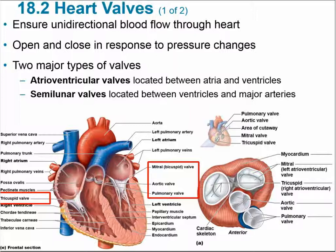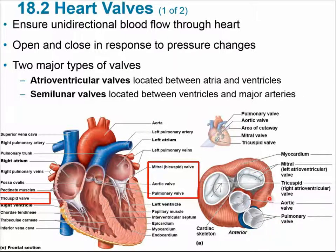Heart valves ensure a one-way direction of blood flow through the heart — no backflow — opening and closing in response to pressure changes as chambers fill and empty. There are two major types: the atrioventricular (AV) valves, located between the atria and ventricles — the tricuspid and the bicuspid — and the semilunar valves, located between the ventricles and the major arteries: the pulmonary valve between the right ventricle and pulmonary trunk, and the aortic valve between the left ventricle and aorta.